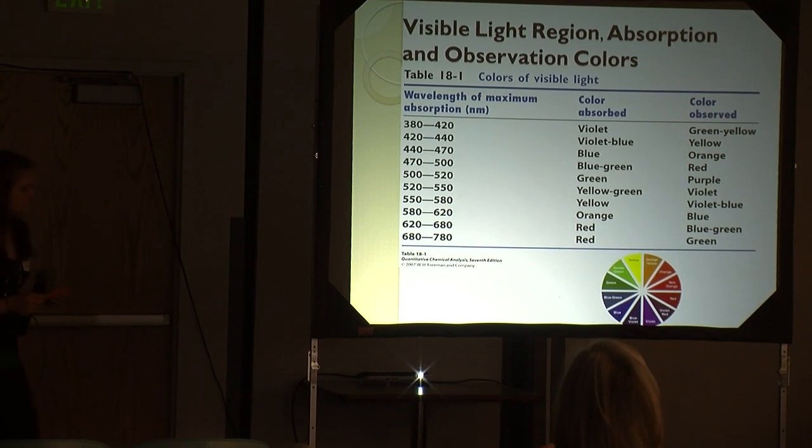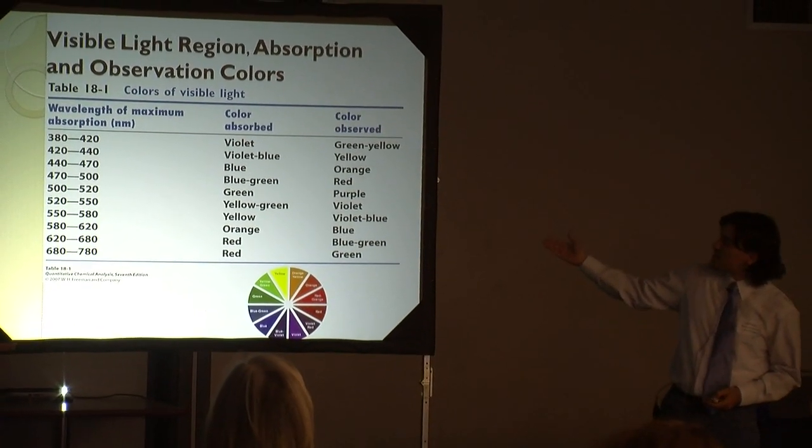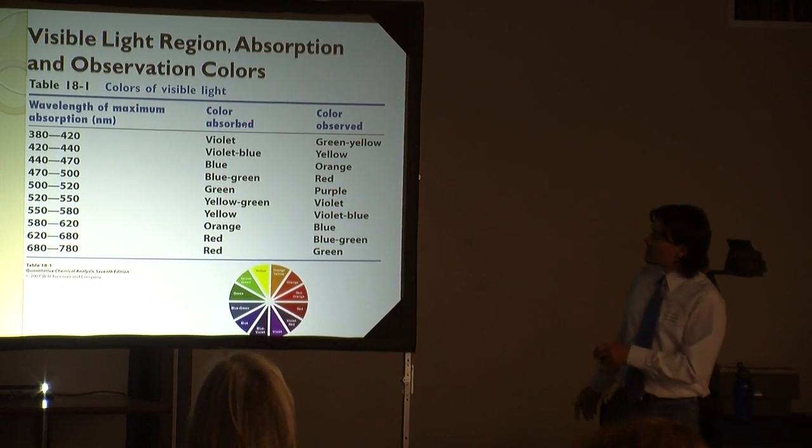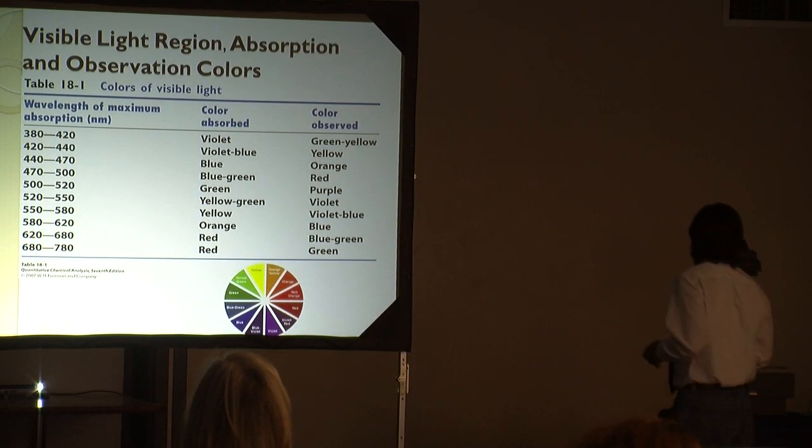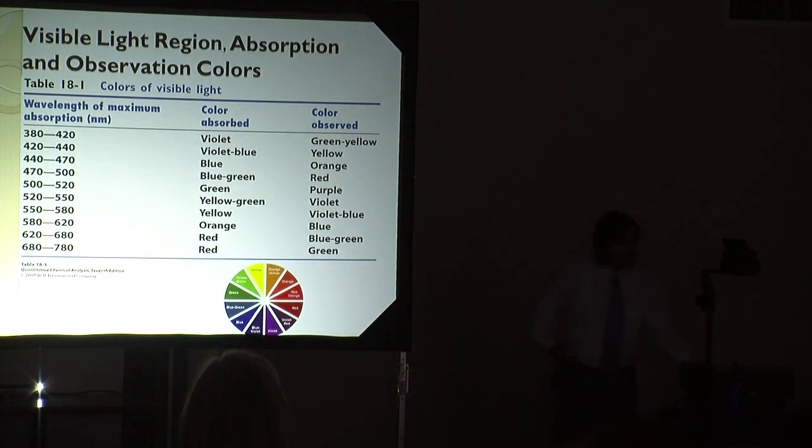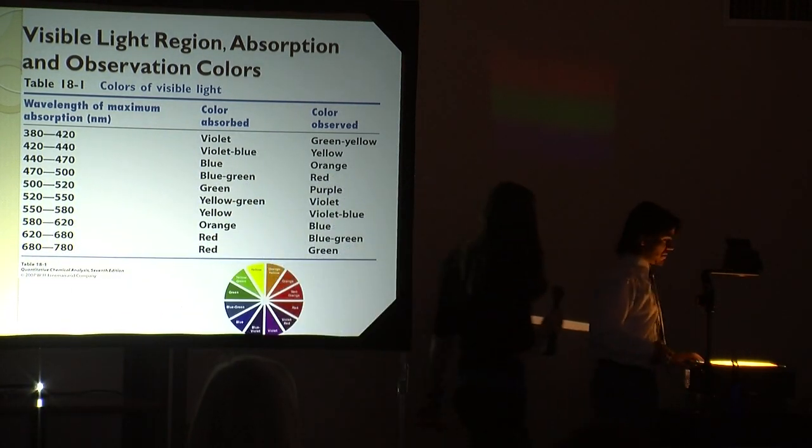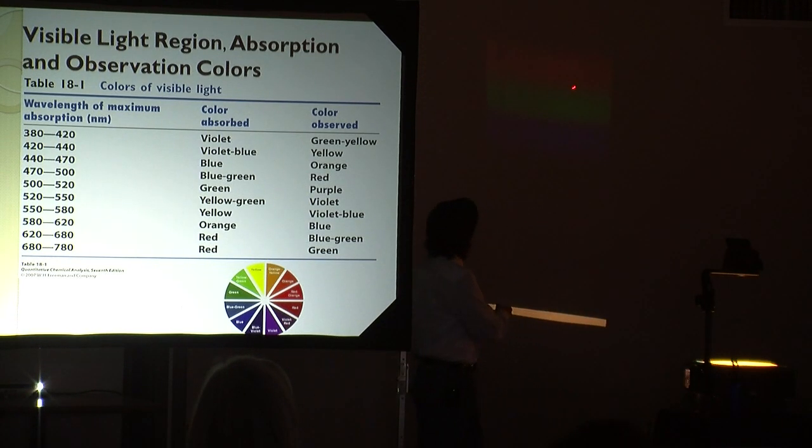This is just a basic theory on how the absorbance of light works. These are the colors that are absorbed and here's the colors that we observe. Let's go to our demonstration. This is basically a rainbow - it's white light spread into its various wavelengths. I don't know if everybody can see this.